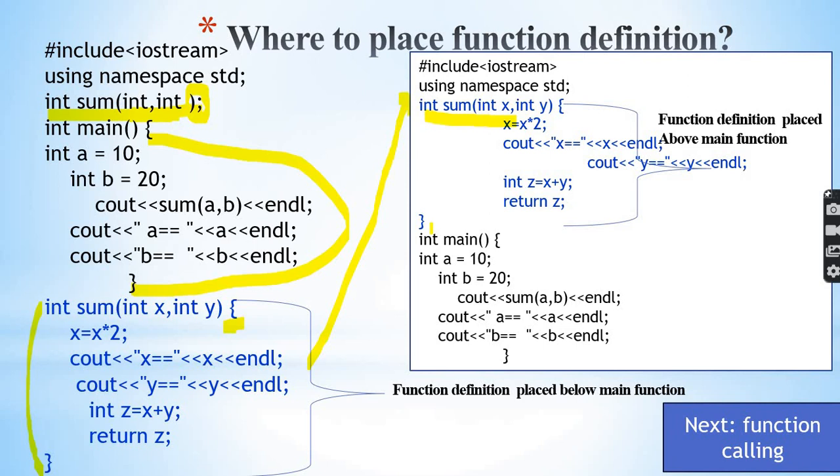Function prototype is above the main function. Function definition is placed below main function. This is how function definition and function declaration or function prototype are placed. Function declaration is placed above main function, and function definition is placed below main function.